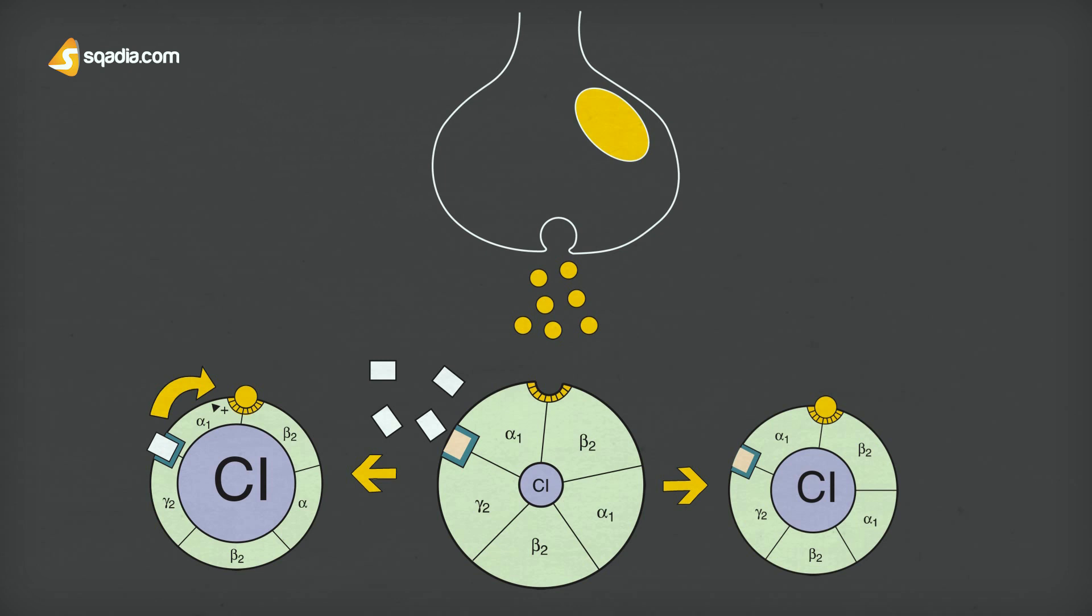In the absence of GABA, benzodiazepines and low doses of barbiturates do not affect chloride ion conductance, and no nerve impulses will be sent out.